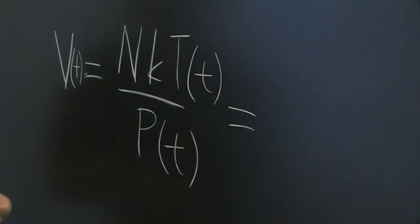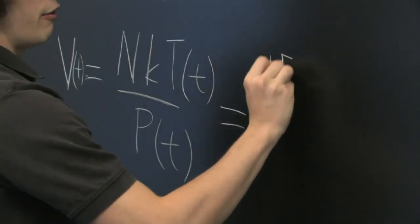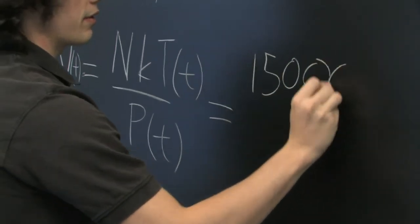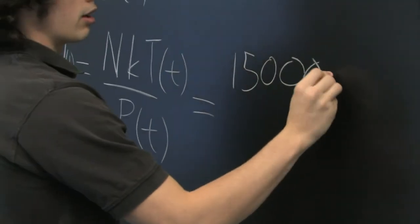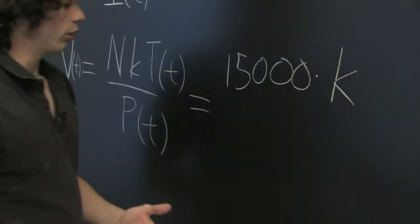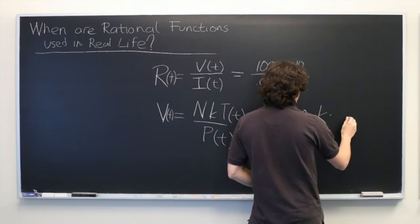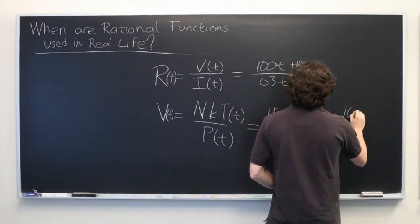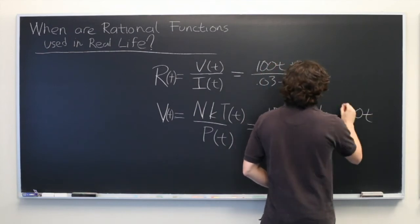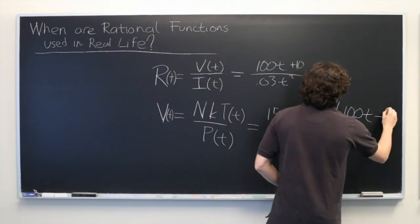Again, maybe we might have, let's say there are 15,000 molecules in the system times Boltzmann's constant, which you can look up online. Temperature as a function of time, perhaps it's 100t minus 40.